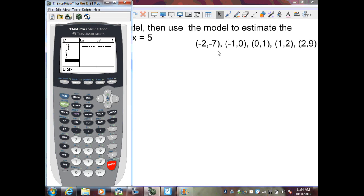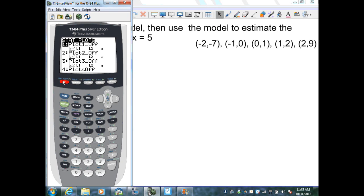Now, I want to enter my y values in list two, so I'm going to tab to the right. List two is highlighted. Enter negative seven, zero, one, two, and nine. Now, to plot that data, I'm going to hit second, y equals for stat plot. I need to hit enter because the first plot is off, and I need to turn it on.